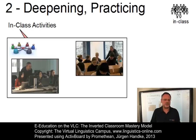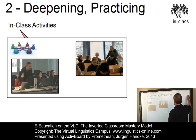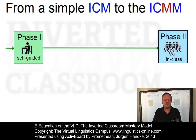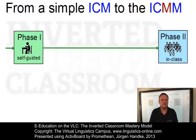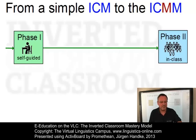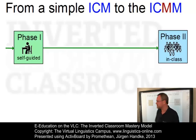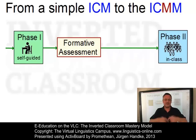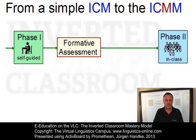Now, the inverted classroom model presupposes that students must have understood the content in phase one before they join the subsequent in-class phase. But how can we ensure this? The solution is quite simple: we have to expand the model by a new phase, which gives our students a chance to demonstrate mastery of content and skills before the in-class phase. So the gap between phase one and phase two must be bridged by an additional phase that we refer to as formative assessment. In the case of the Virtual Linguistics Campus, these are of course electronic tests.